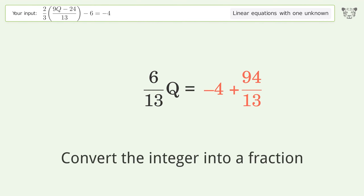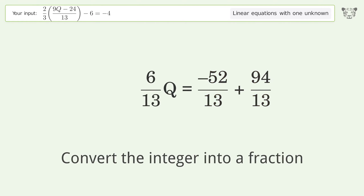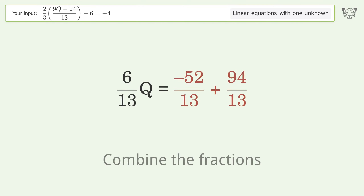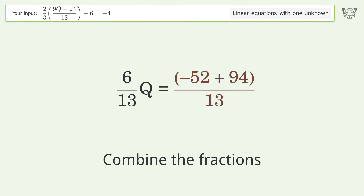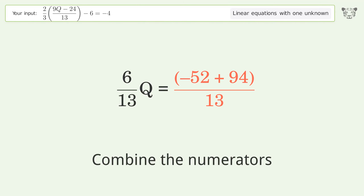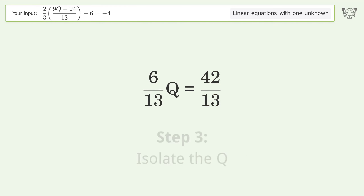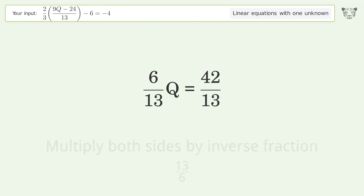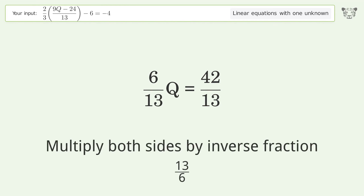Convert the integer into a fraction, combine the fractions, and combine the numerators. To isolate q, multiply both sides by the inverse fraction 13 over 6.